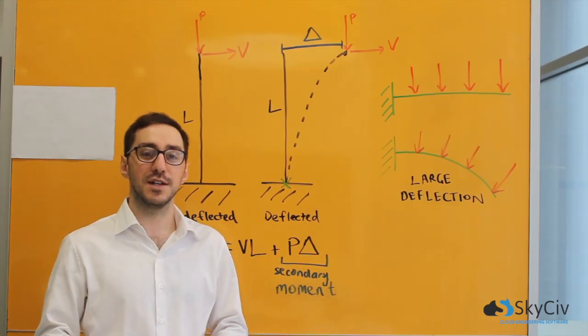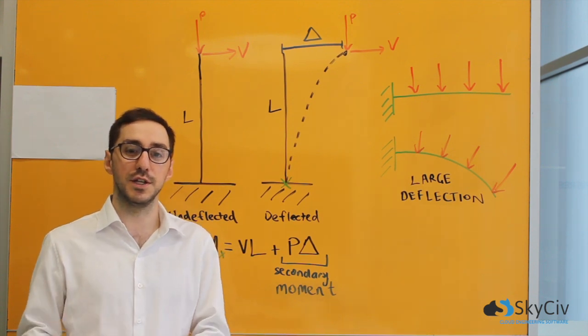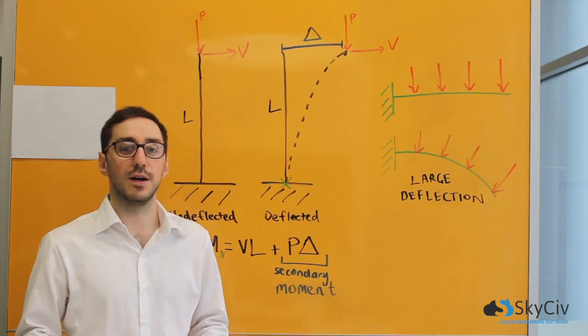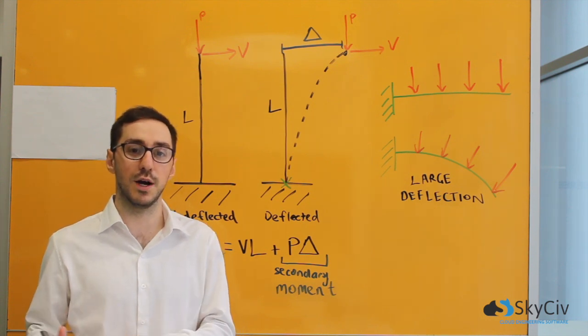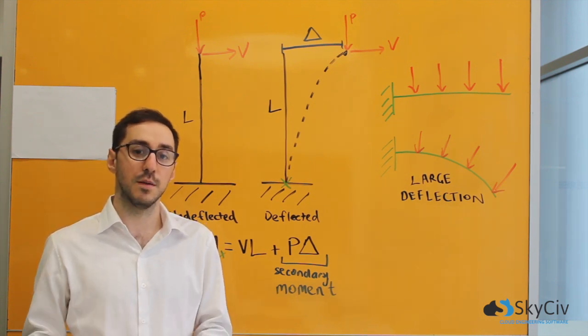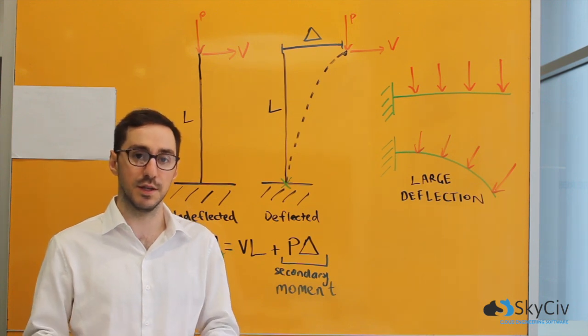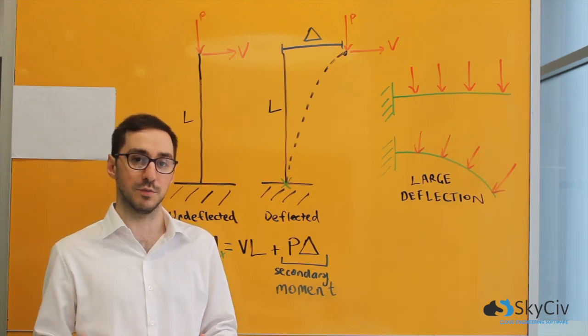If the P-delta analysis is so great, why don't engineers use it all the time? One of the downsides is that it can take a little bit more time for the analysis to run. Plus engineers like to make assumptions and simplify the problem as much as possible.